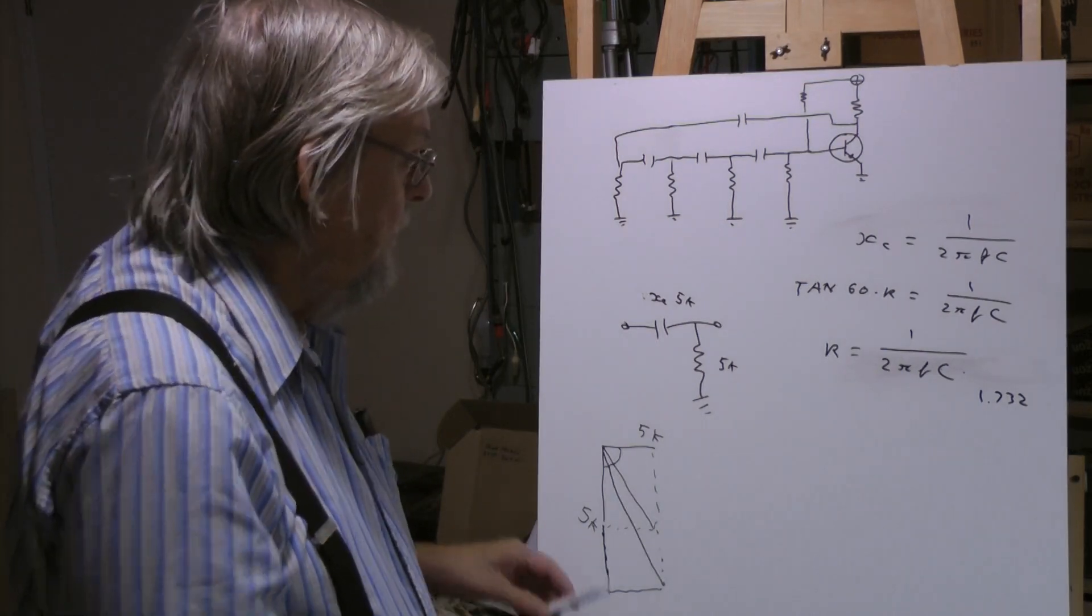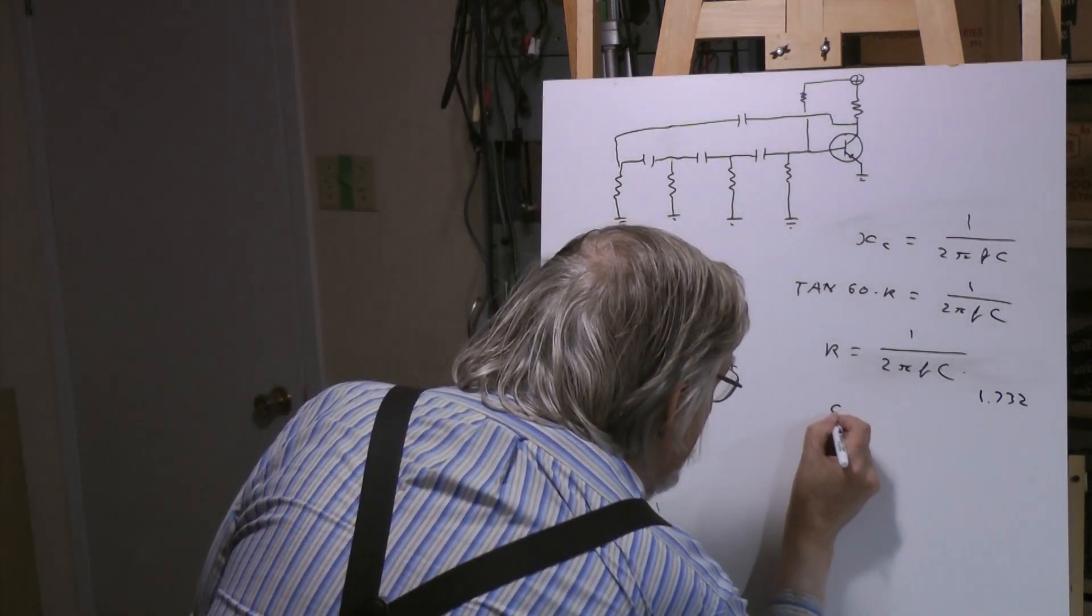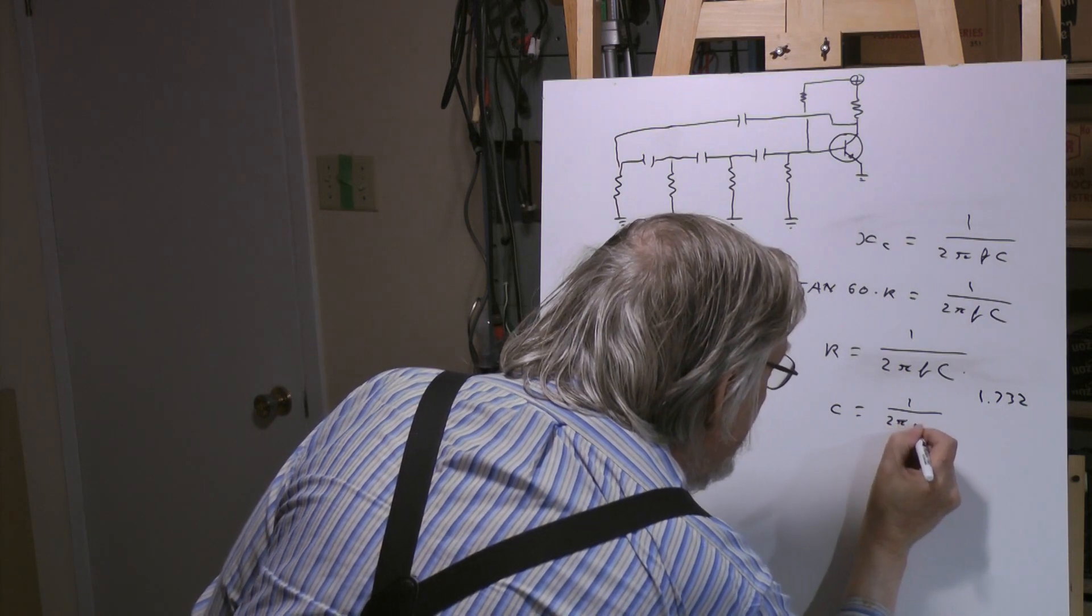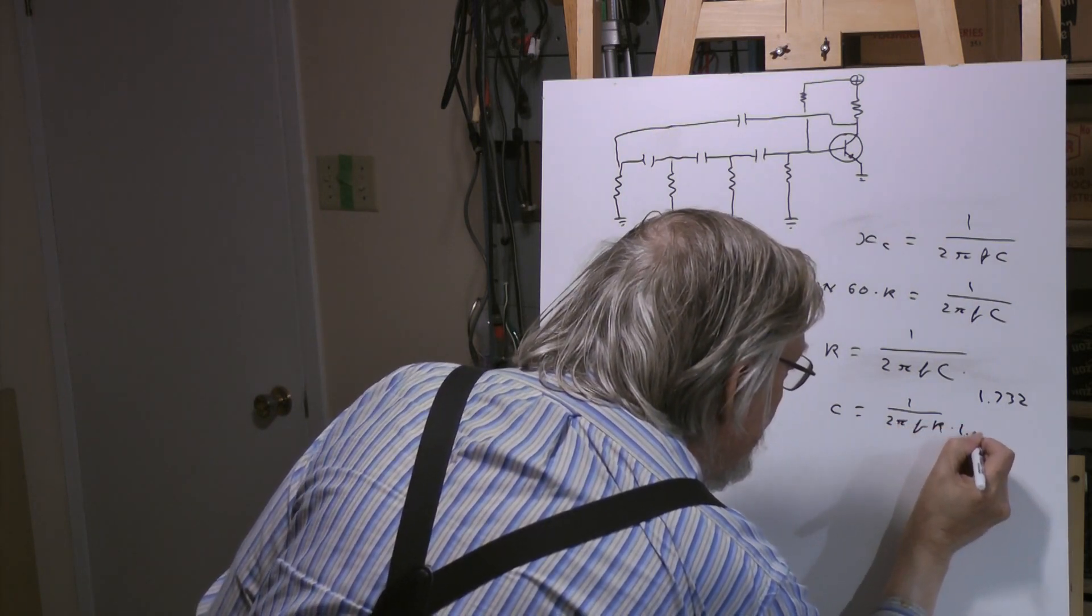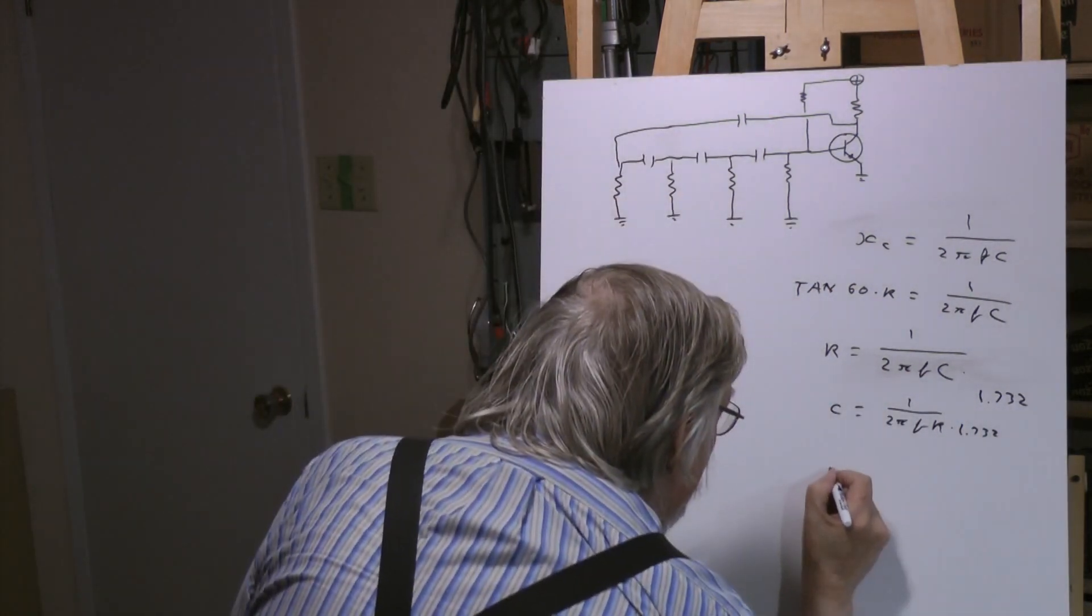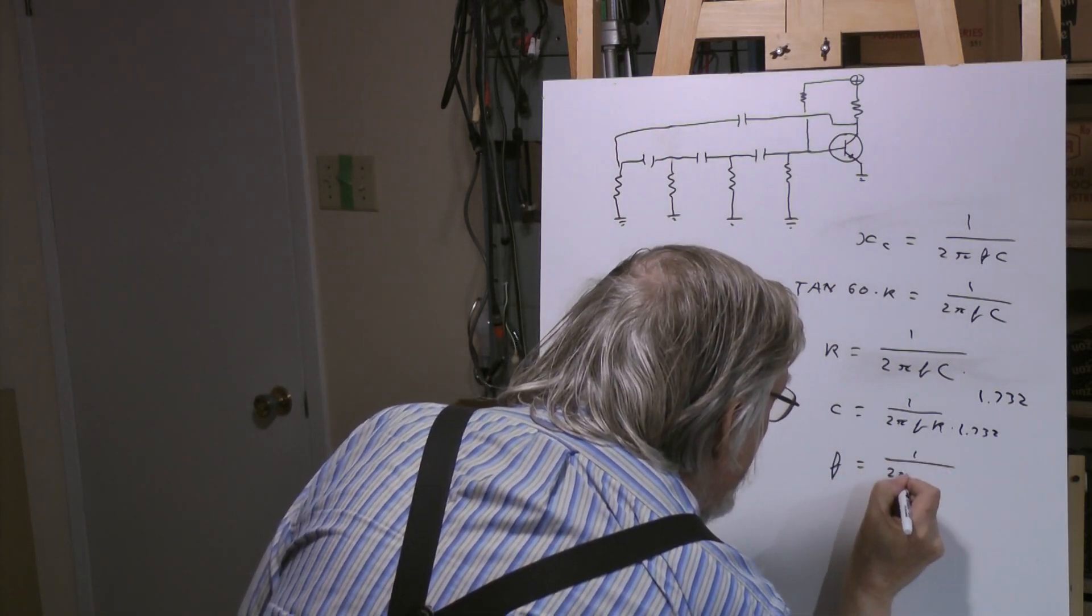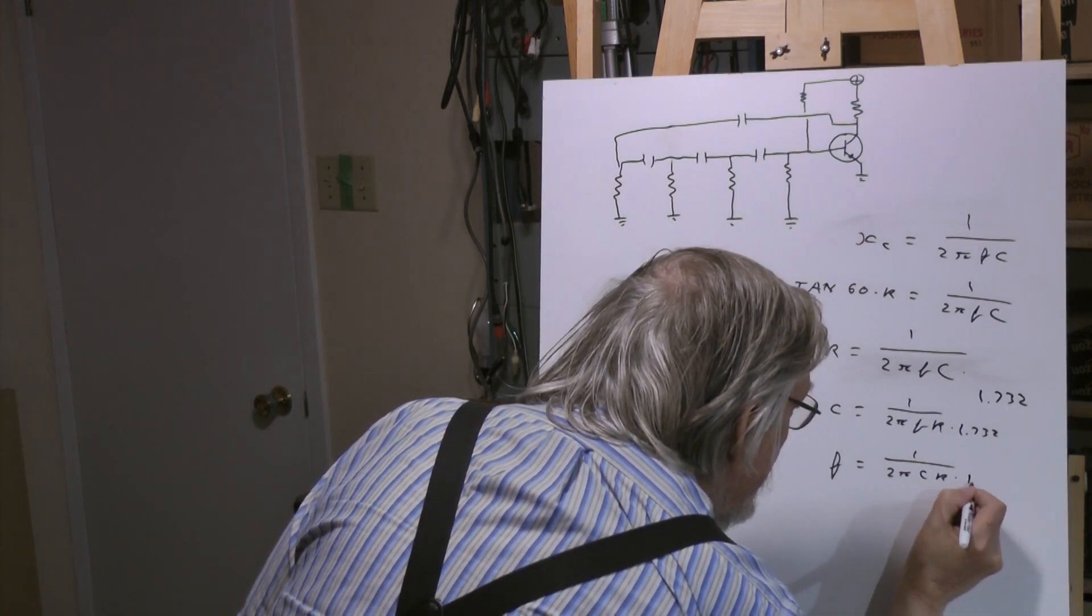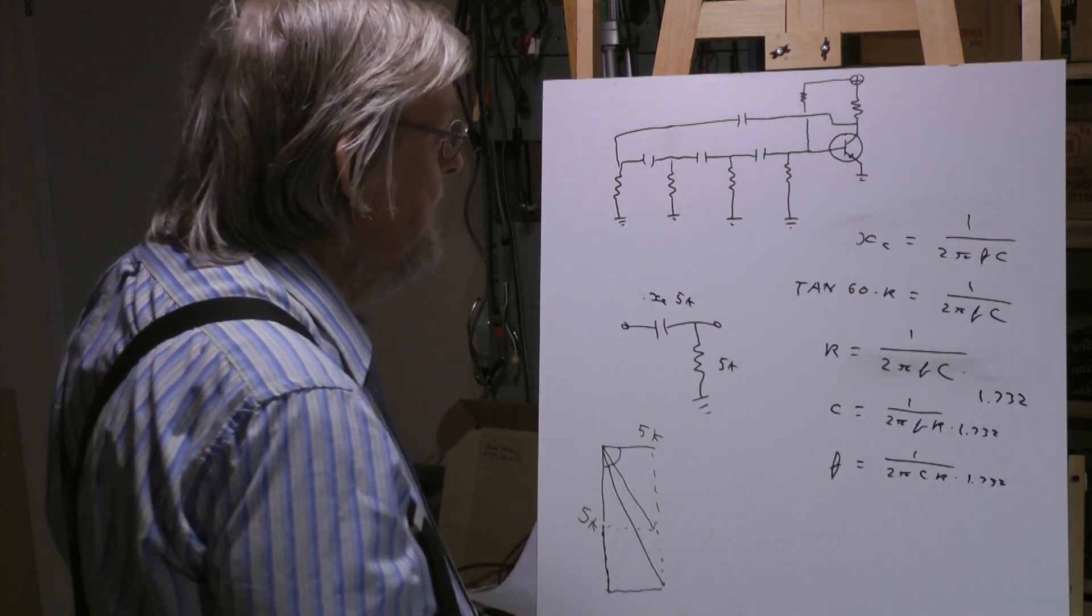Or if you want to find your capacitor value, C equals 1 over 2 pi F R times 1.732, and of course frequency equals 1 over 2 pi C R times 1.732. You can calculate all the values.